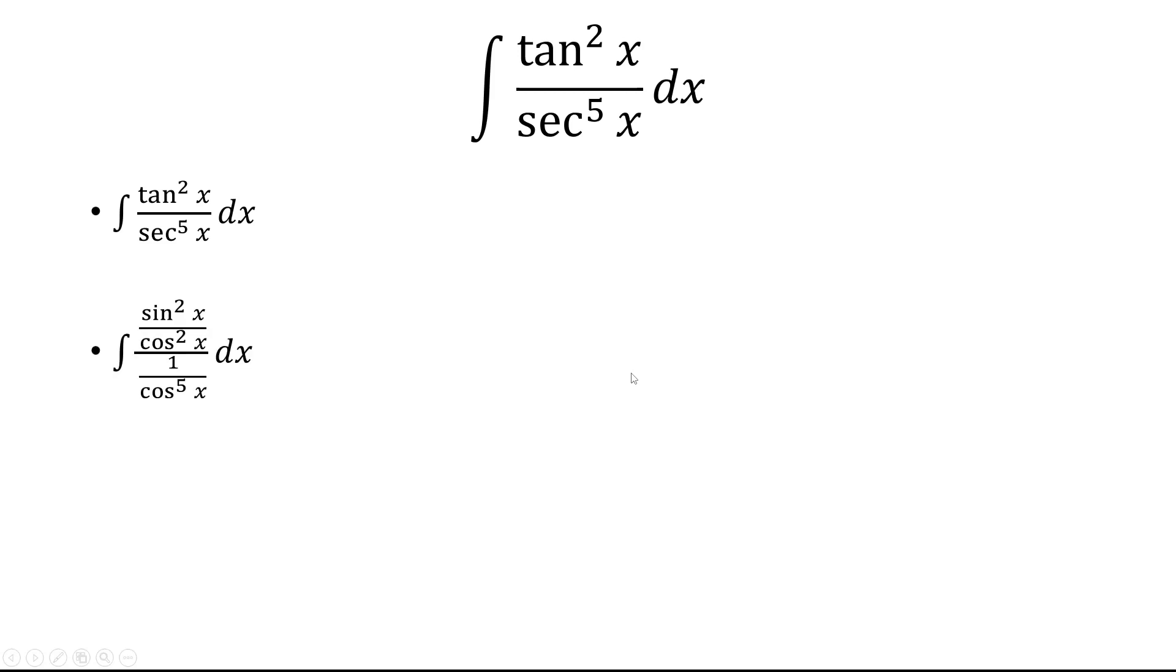So tangent squared is sine squared over cosine squared. Secant to the fifth is one over cosine to the fifth. So what I have here is sine squared over cosine squared divided by one over cosine to the fifth.